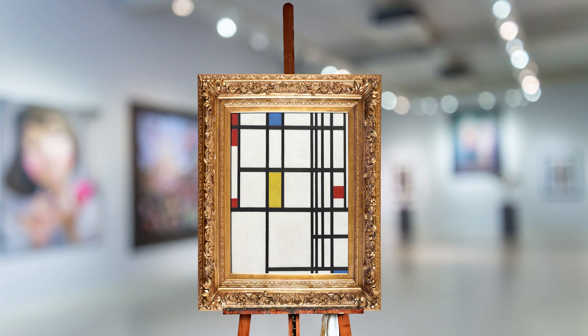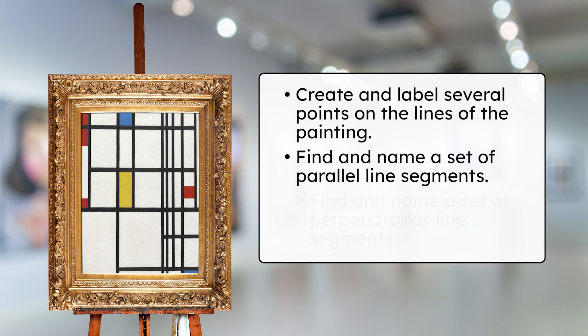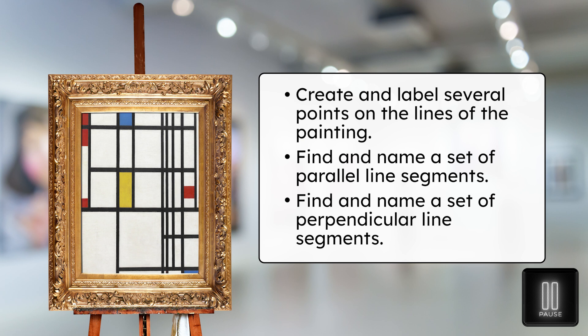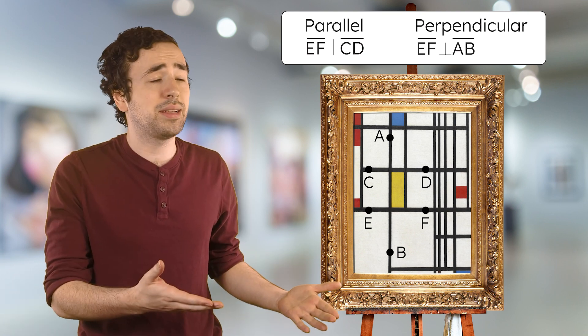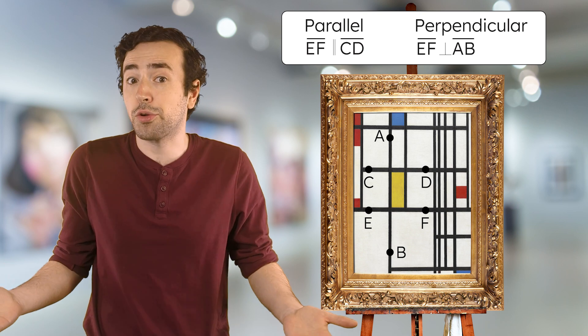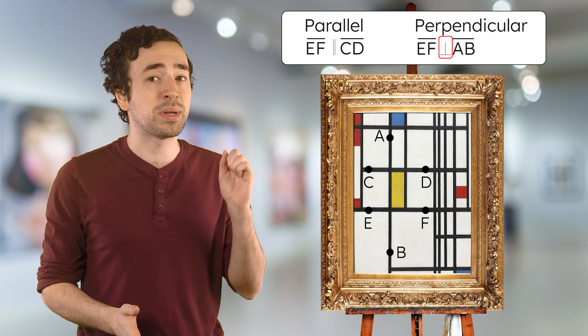Now we can take what we've learned about points, lines, and rays, and check out that painting again. After learning about different types of lines, can you observe anything new? Maybe you're noticing some parallel lines, or that the lines in this painting are actually line segments. In your notes, create and label a few points on the various line segments so that the line segments can be named. Then find a set of parallel line segments and a set of perpendicular line segments. Pause here to record your thinking. You should have used the parallel symbol to notate your sets of parallel line segments, and the perpendicular symbol for your perpendicular line segments.